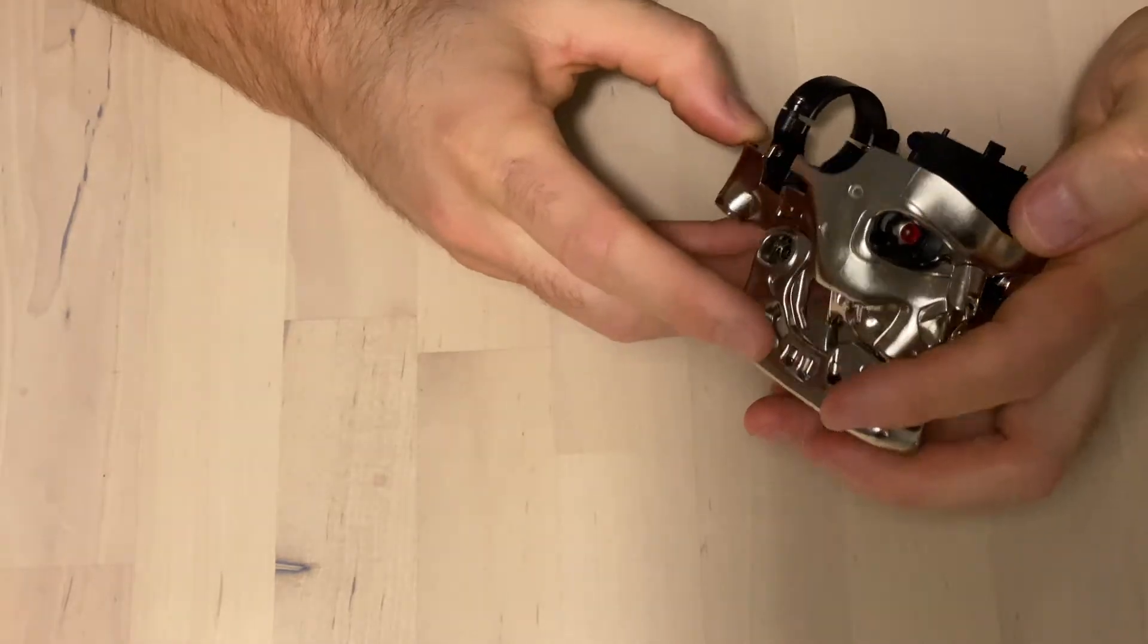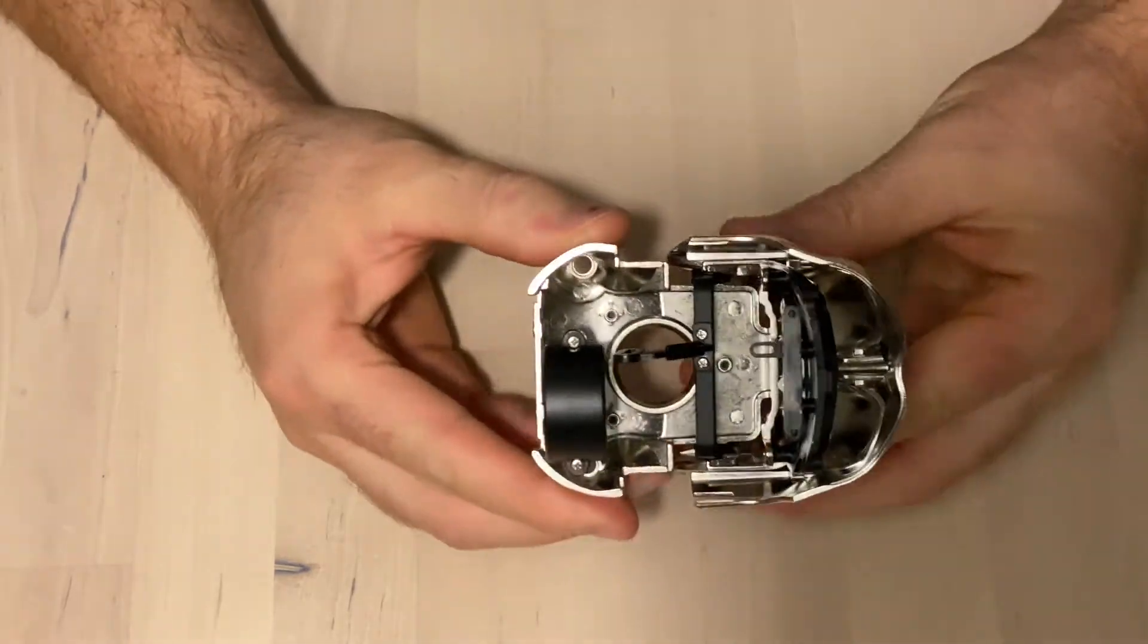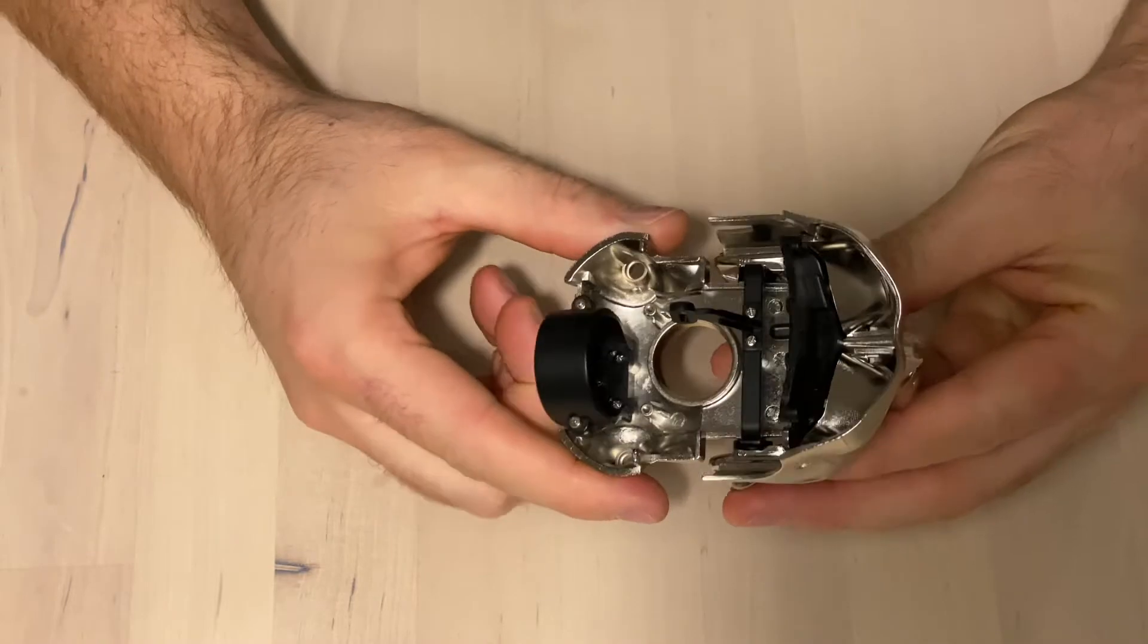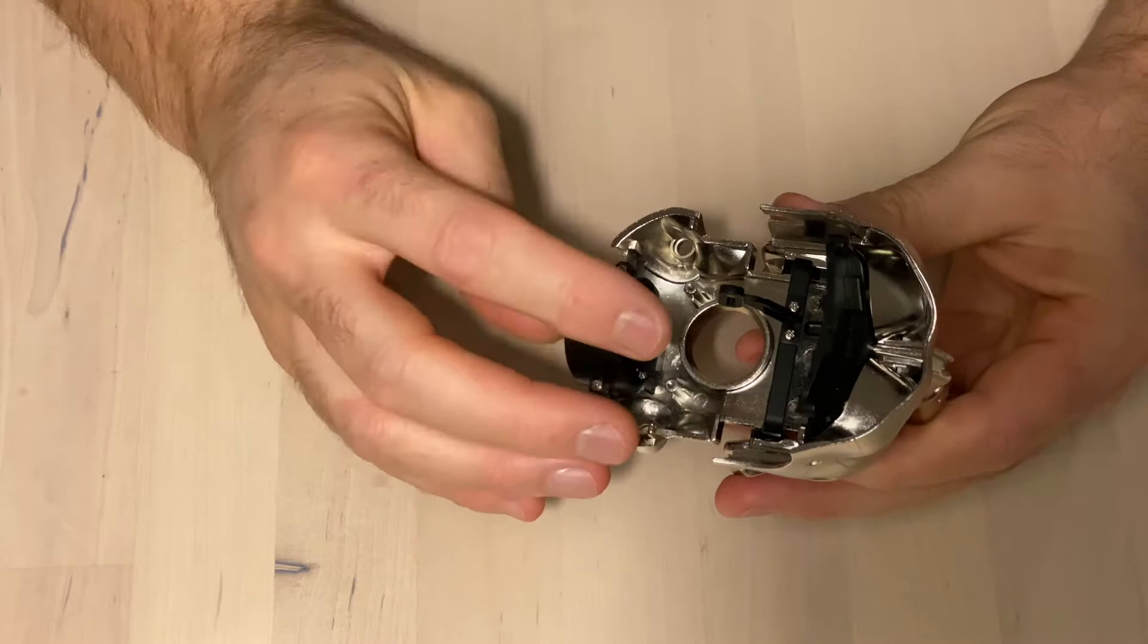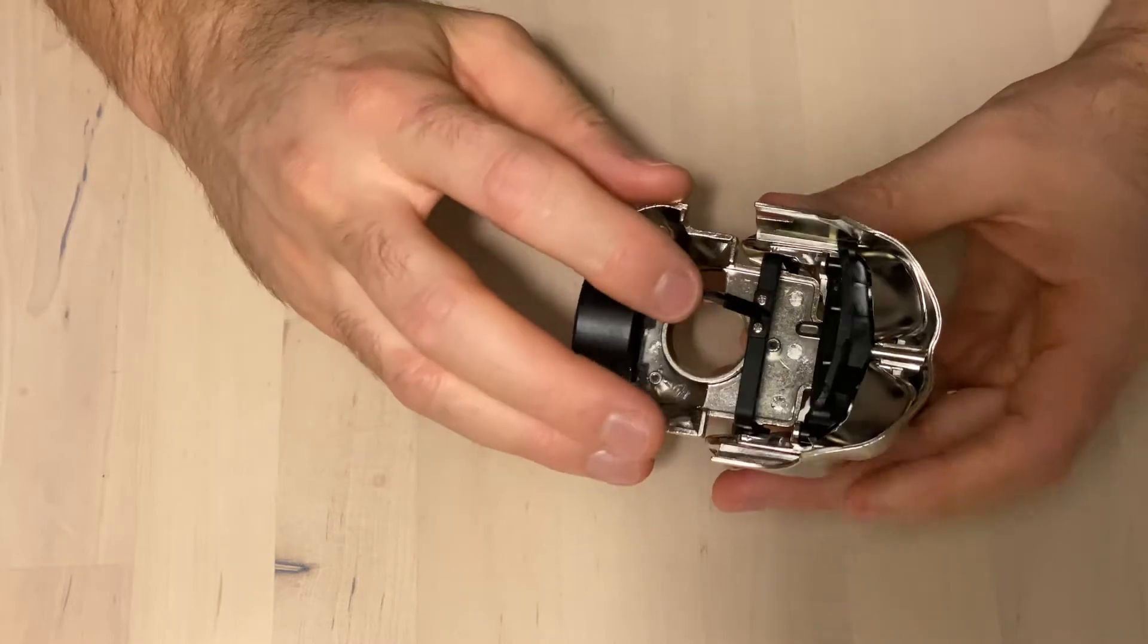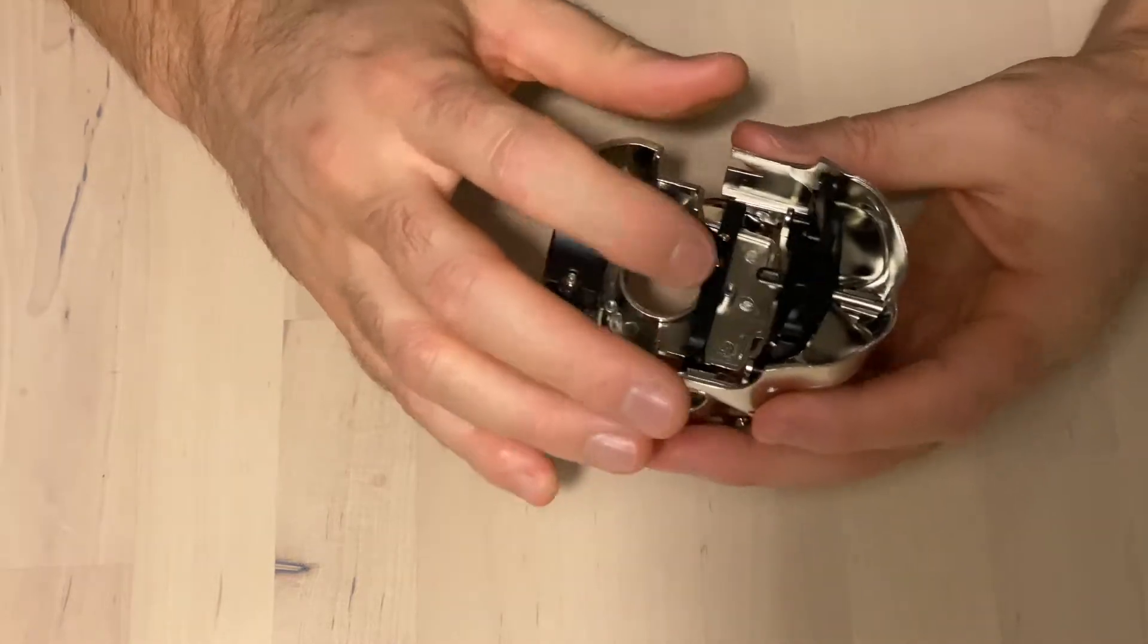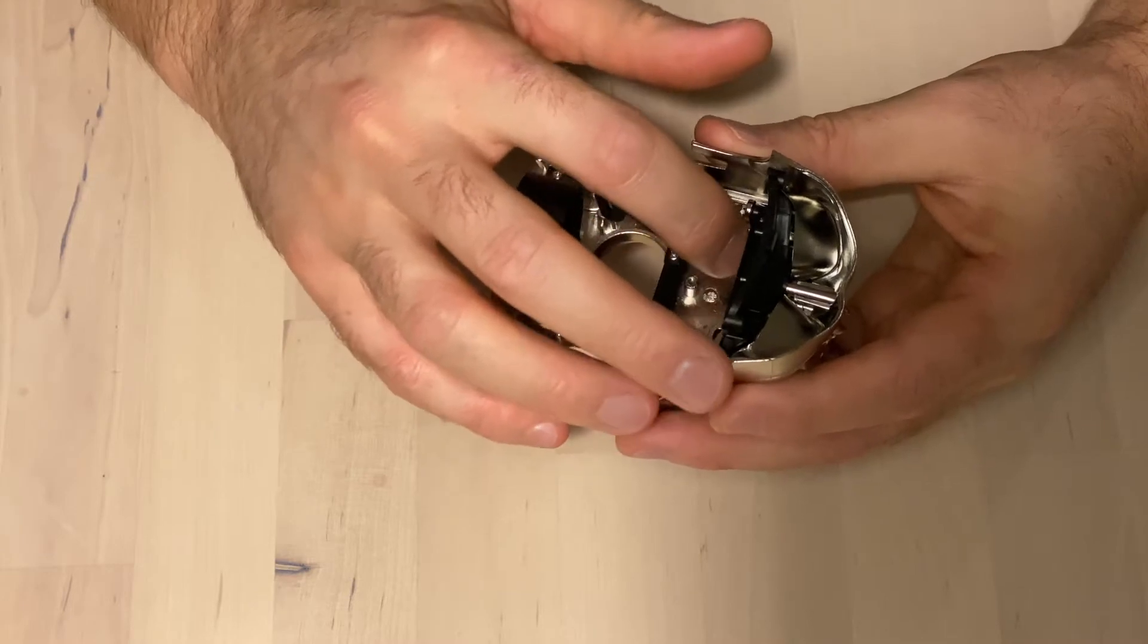Basically what you need to do is return the internals of the head to this state. So we keep this stepper motor mount for the jaw, we obviously keep the jaw mechanism and we keep the eye section.